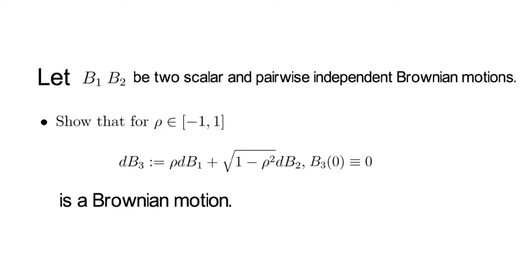Part B: Show that rho is the correlation process between B1 and B3.